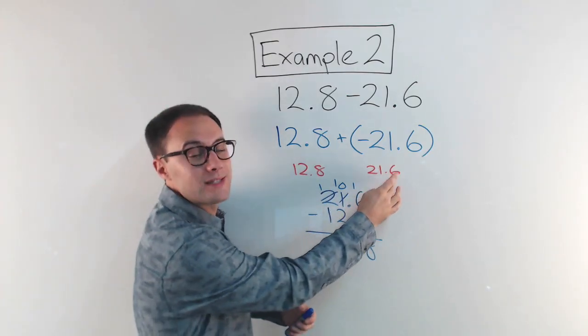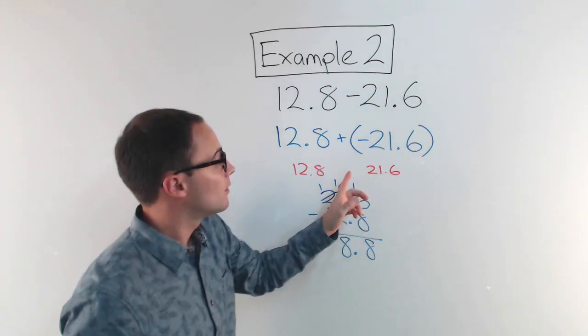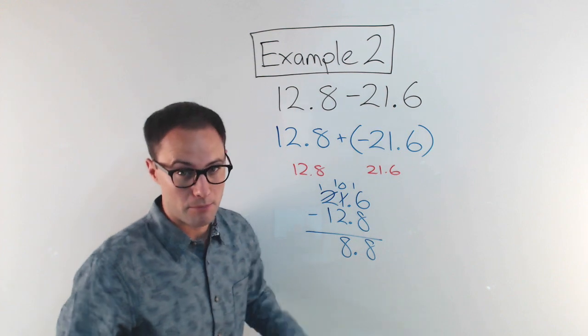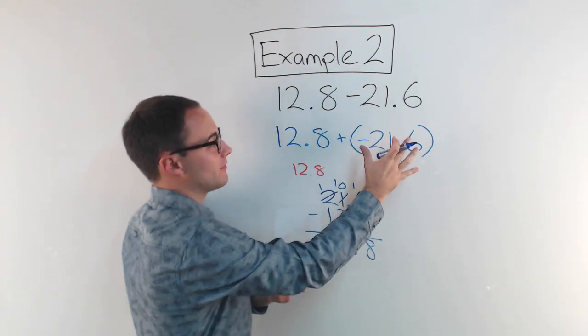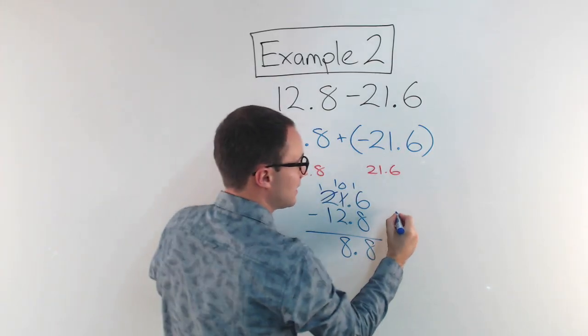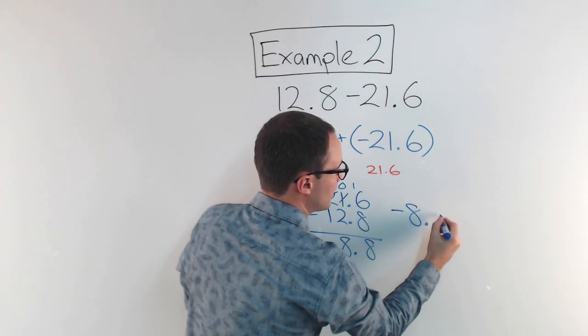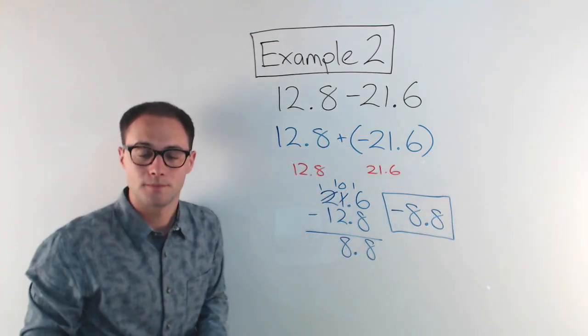And that's the 21.6. And because that was negative, I'm going to have negative 8.8 left over. Because basically, this negative cancels out all that 12.8, and then there's still negative 8.8 left over.